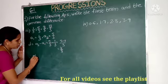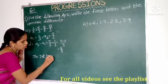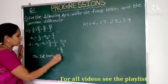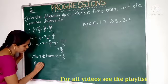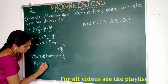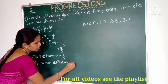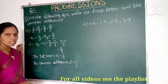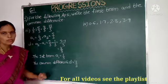Therefore, the first term A1 is 1/3 and the common difference D equals 4/3. So A1 equals 1/3 and D equals 4/3.